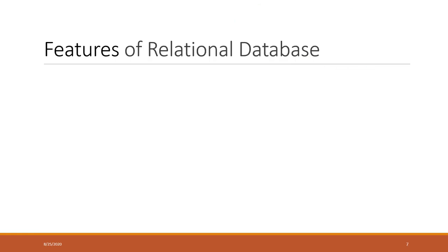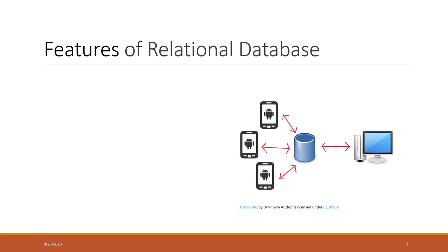There are also other features of the relational database. The major objective of a database is to share data with other users more easily, across different devices such as tablets, cell phones, desktops, and laptops. We will introduce these features one by one in the following weeks. The first is database connections — each user can establish a connection to the database, and the database recognizes the right user and gives them permission to access the appropriate tables.